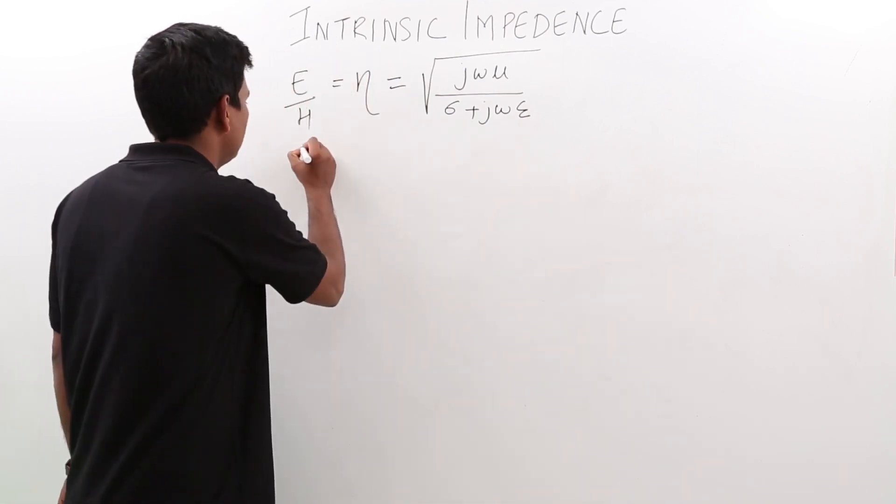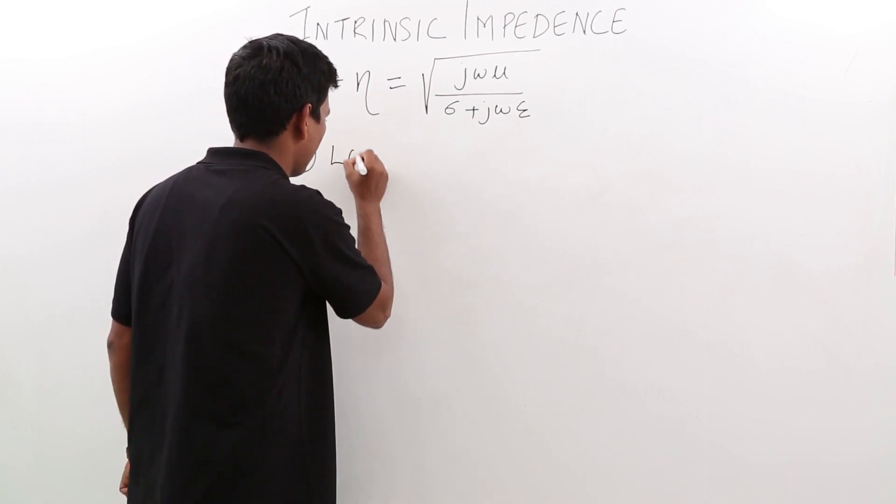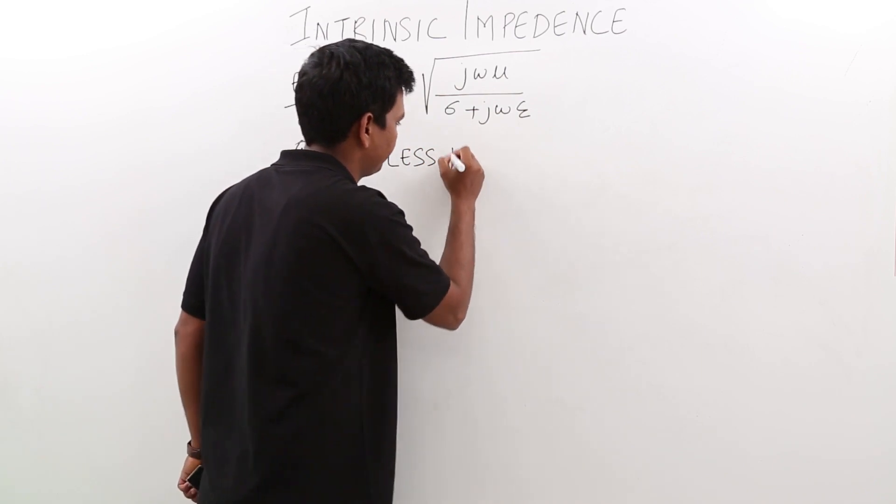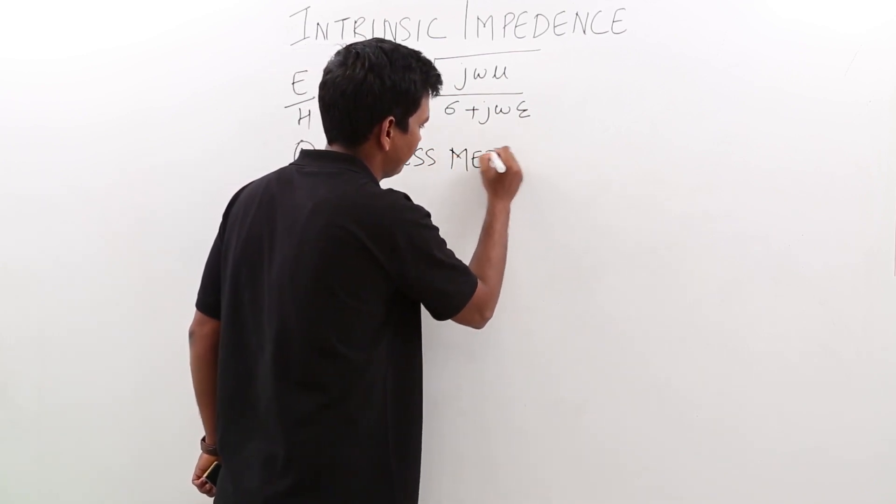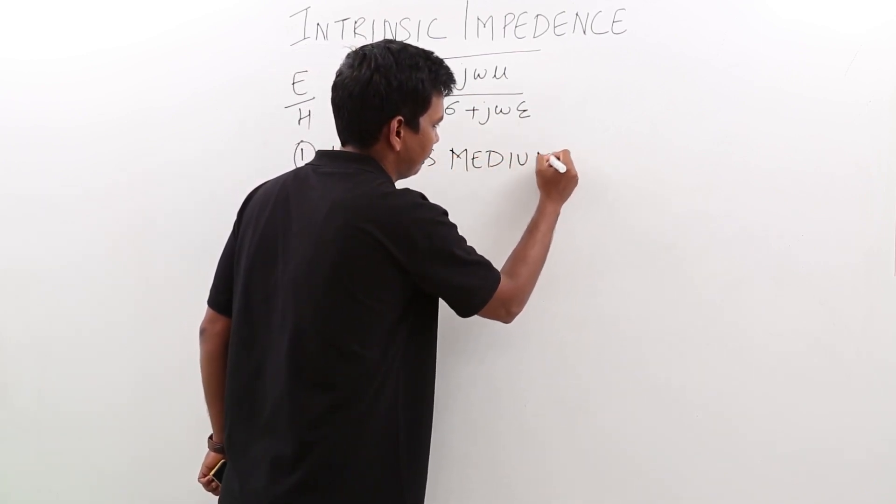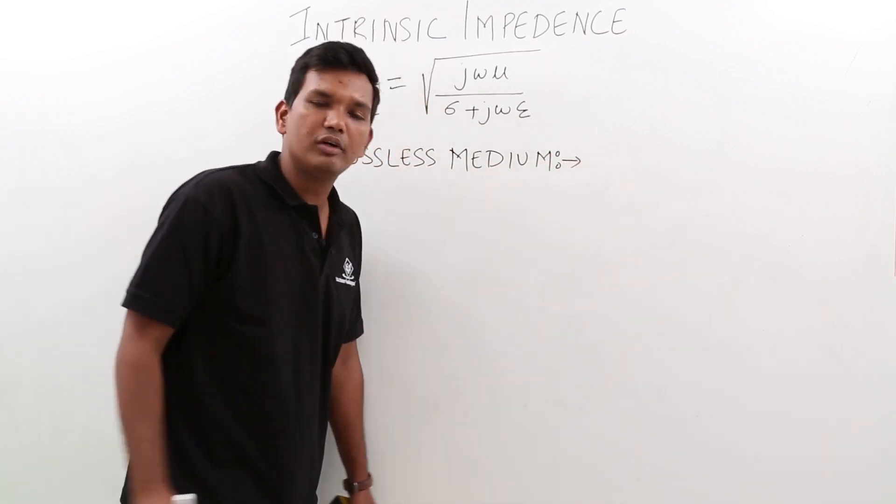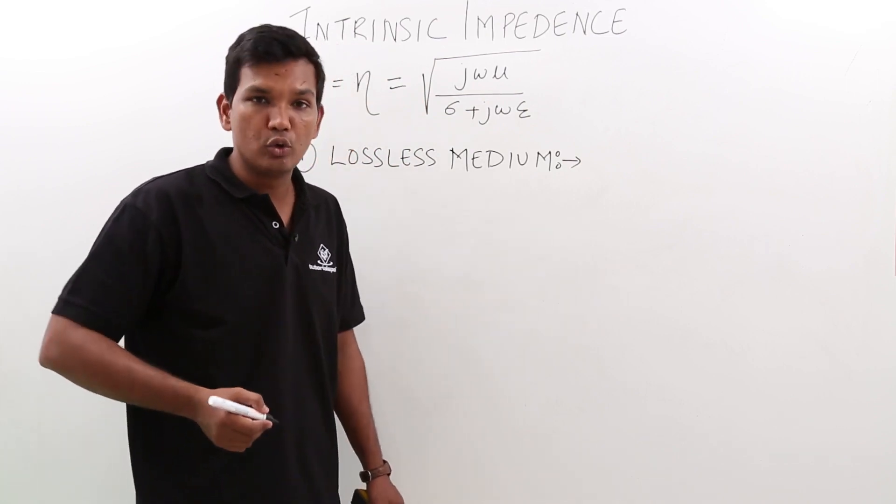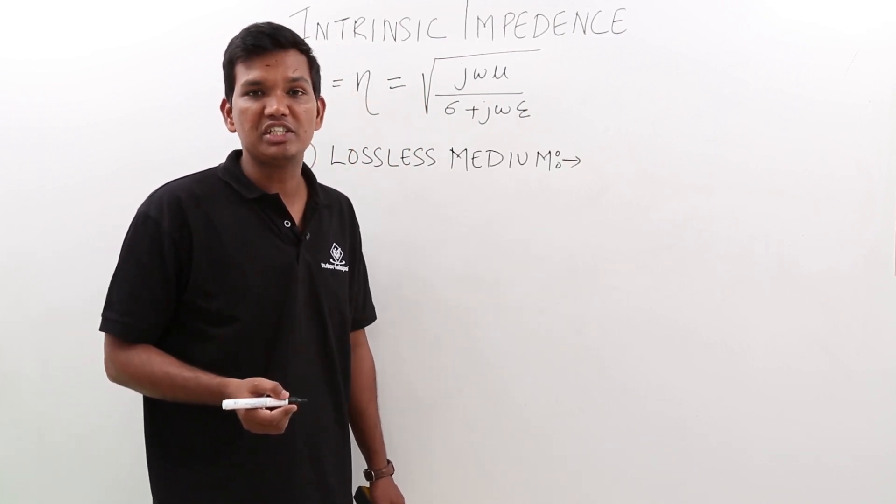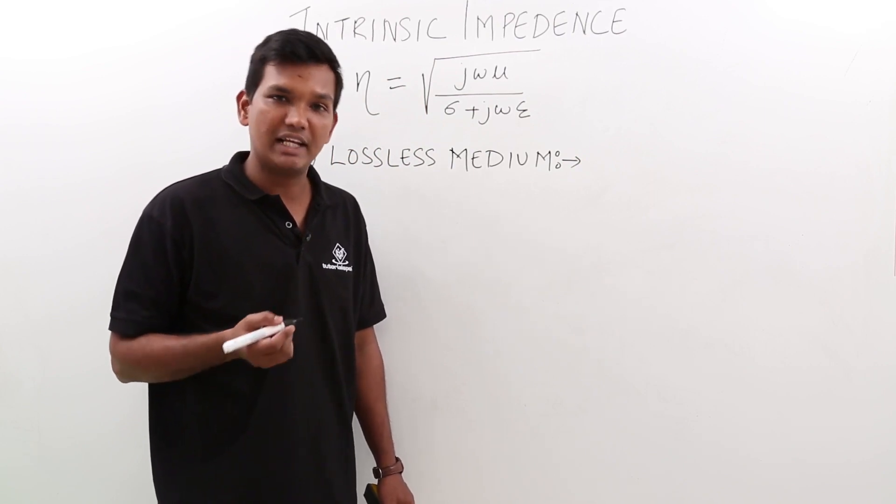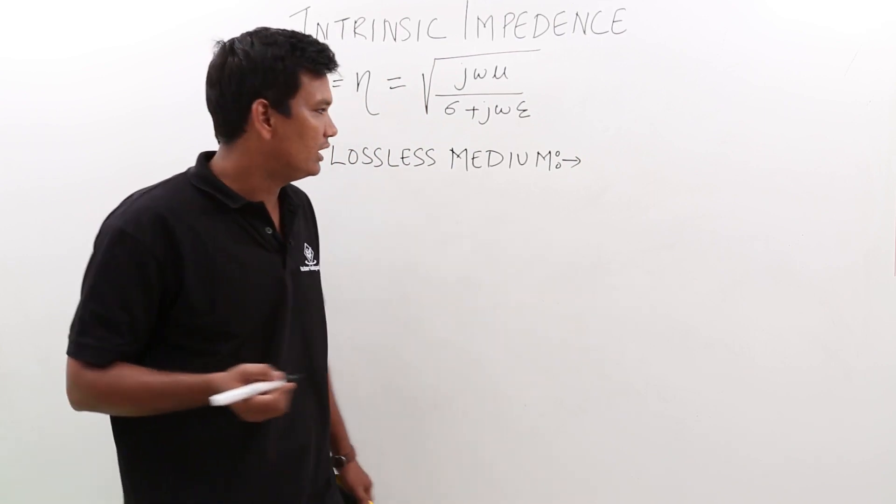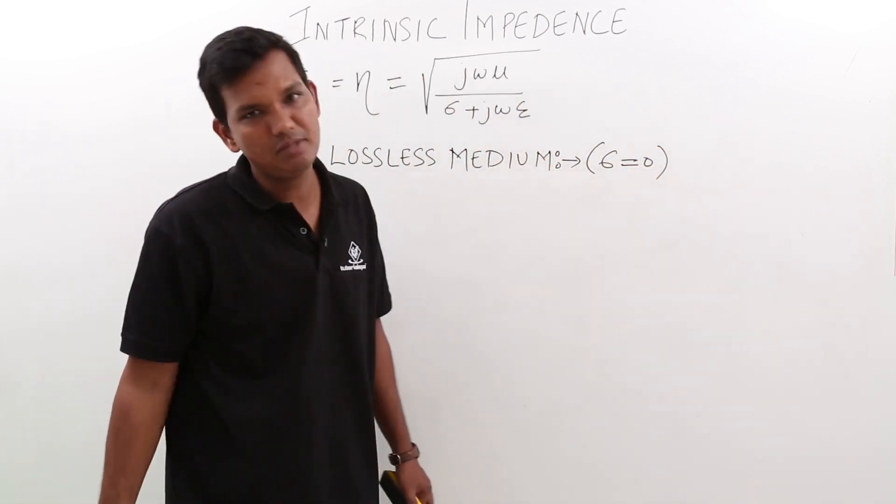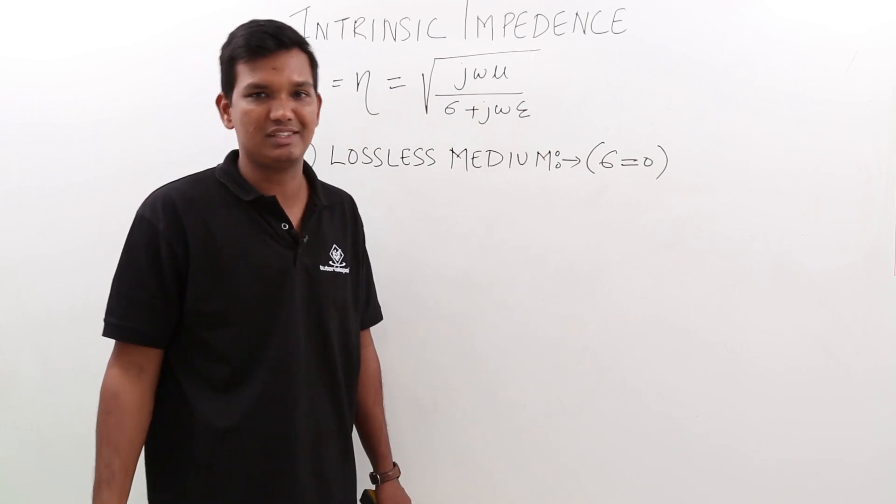Let us take the first medium as a lossless medium. What do we know about lossless mediums? Lossless mediums have no loss, so the free charge carriers would be zero. When free charge carriers are zero, sigma equals zero. If sigma is zero, the conductivity is zero and free charge carriers would be zero.